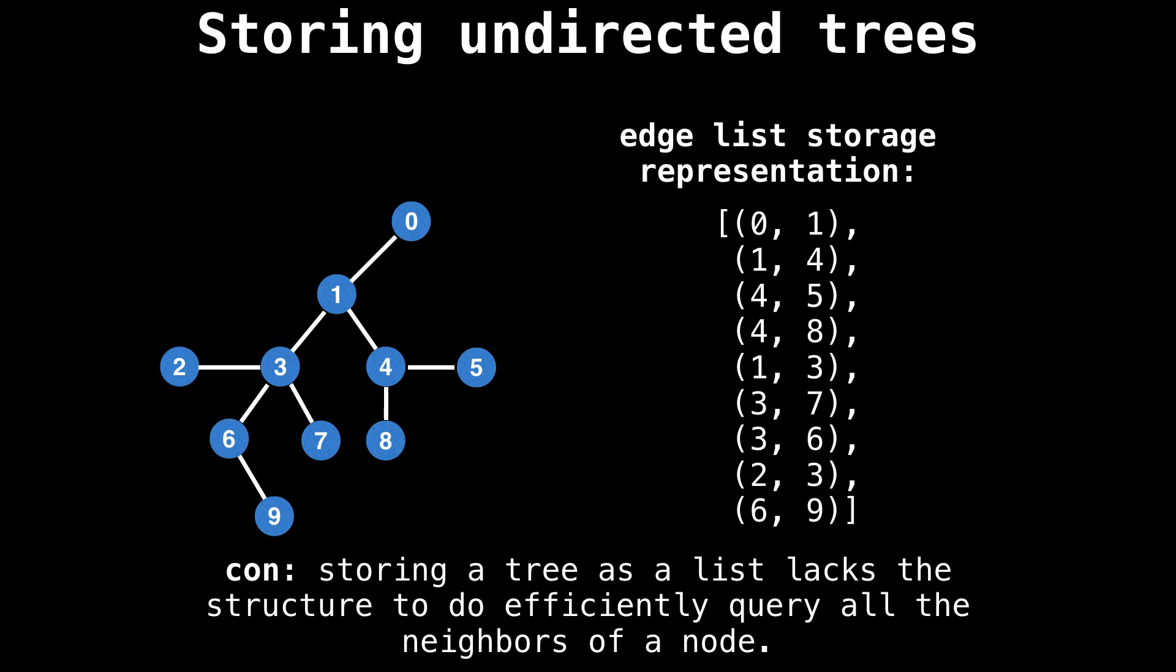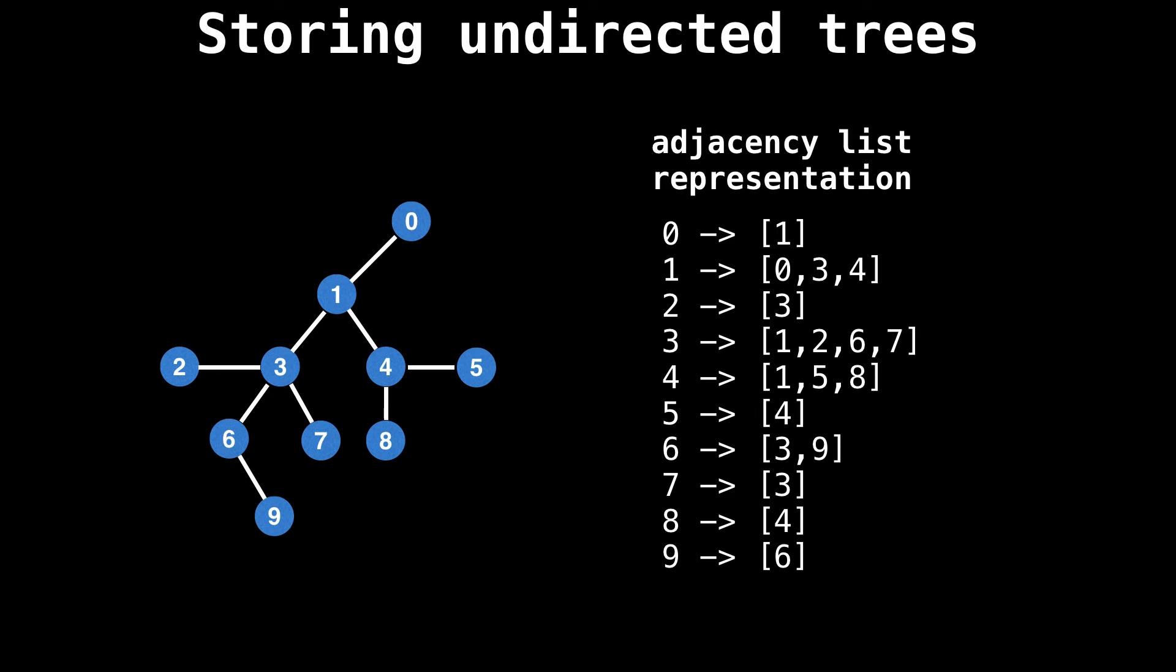The downside, however, is that storing your tree as a list lacks the structure to efficiently query all the neighbors of a node. This is why the adjacency list is usually a more popular option to represent a tree. In this representation, you store a mapping between a node to all its neighbors. For example, node four has the neighbors one, five and eight. So in the adjacency list, node four maps to the list containing one, five and eight respectively.